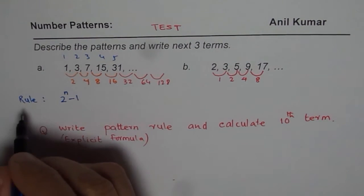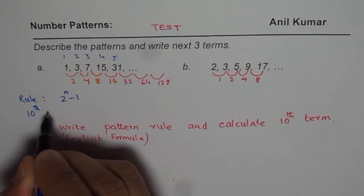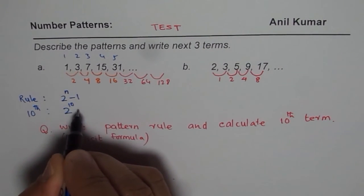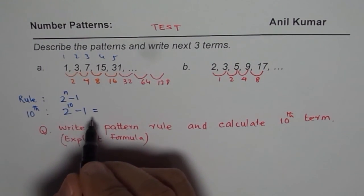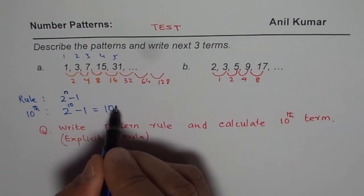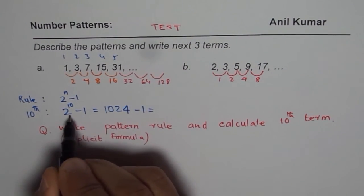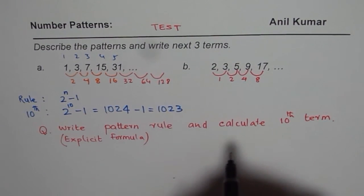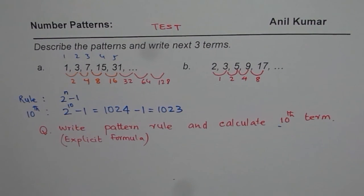So therefore, using this formula, we can find the 10th term. The 10th term will be 2 to the power of 10 minus 1. As you know, 2 to the power of 10 is 1024. 1024 minus 1 — you can use a calculator — will give you 1023 as the 10th term for the first set of patterns.